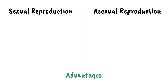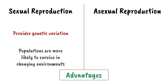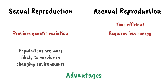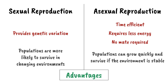To reiterate the main points: sexual reproduction has the advantage of providing genetic variation within a population, and so the populations are more likely to survive in changing environments. Asexual reproduction is more time efficient, requires less energy, and doesn't rely on finding a mate, meaning populations can grow quickly and survive if the environment is stable.